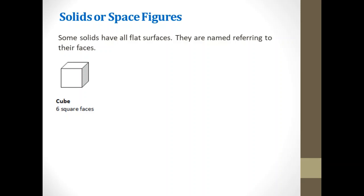So we have here a cube. A cube has six square faces. The other one is a rectangular prism. If it's a rectangular prism, it has six rectangular faces.